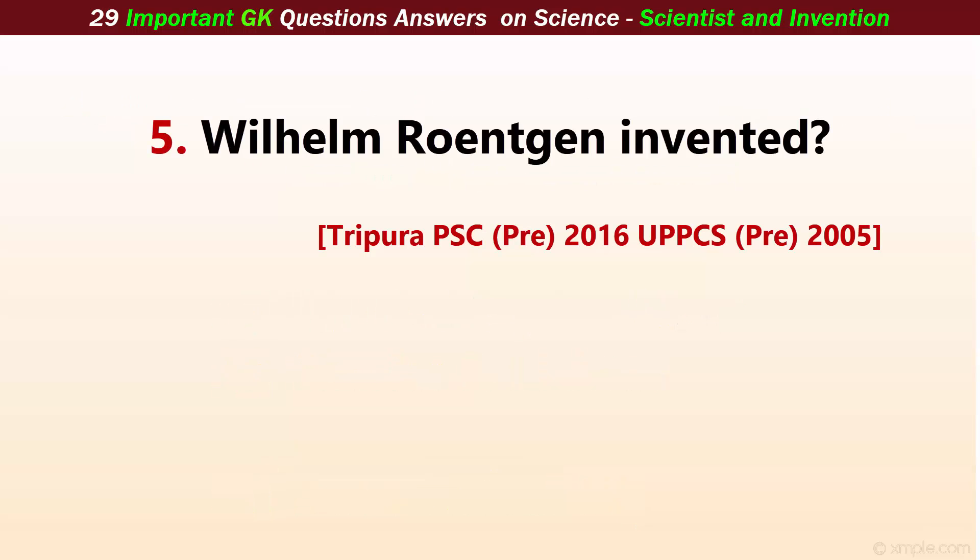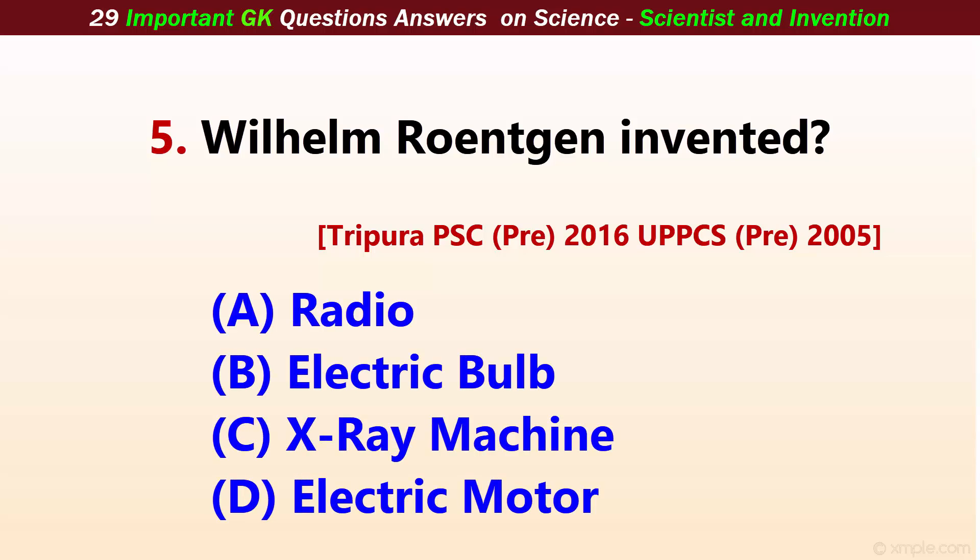Wilhelm Röntgen invented? Answer C: X-ray machine.